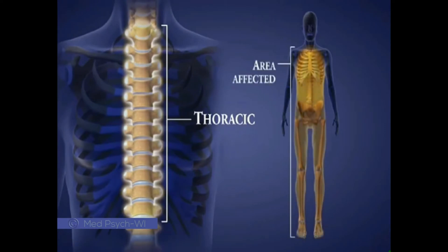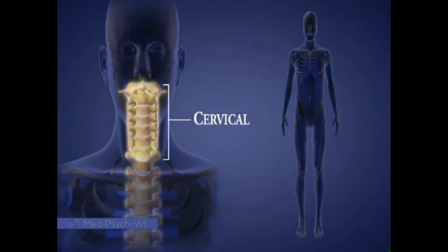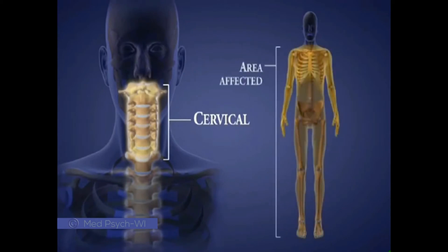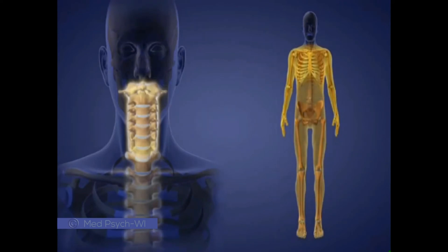Injuries at the thoracic levels can affect leg, chest, and abdominal muscles. At the top of the spine, there are seven cervical vertebrae in the neck, called C1 to C7. Injuries at these levels can affect lower limbs, chest, and abdominal muscles, as well as diaphragm, arm, wrist, and hand function.